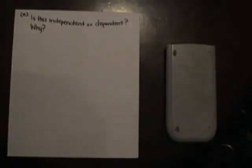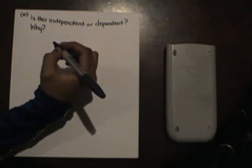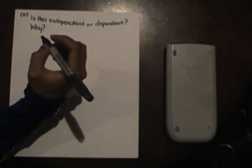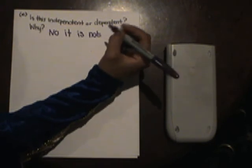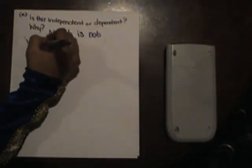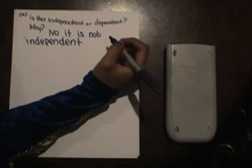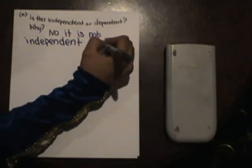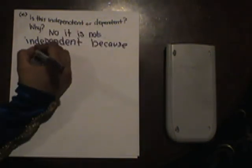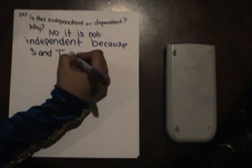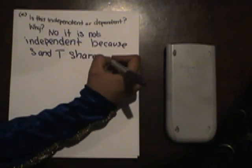The next question: is this independent or dependent and why? It is not independent — it is dependent. It is dependent because S and T fall under both categories; S and T share the categories.